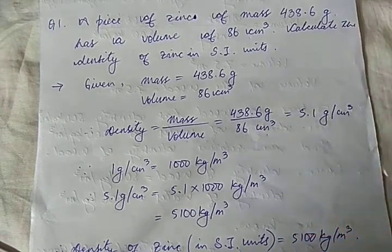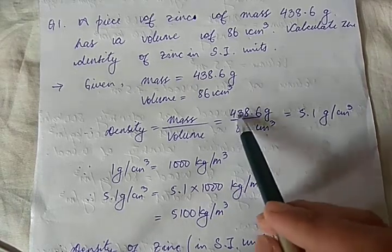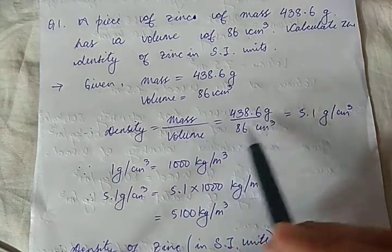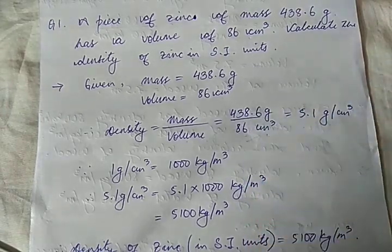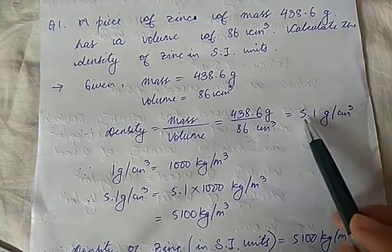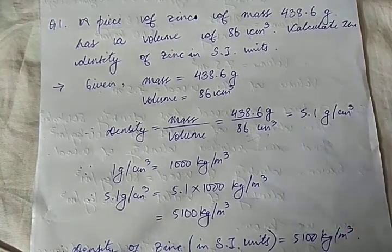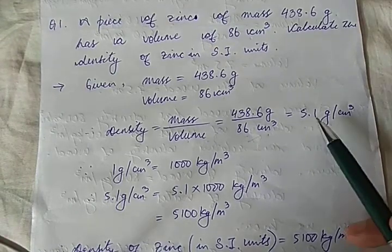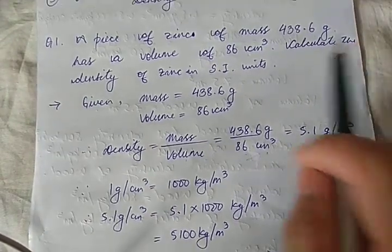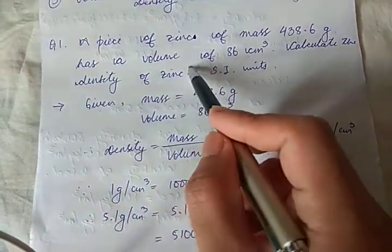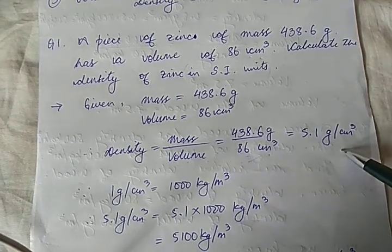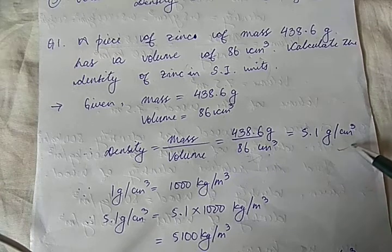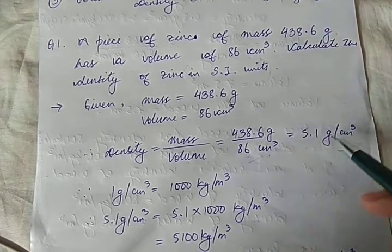You don't have the privilege of using a calculator, so you have to work the mathematics out — divide 438.6 by 86. Start with 2: 2 into 43 is 86, divide by 2 and see what you get. You eventually get 5.1 grams per centimeter cube. If the question had not asked for SI units, you could stop here at 5.1 g/cm³.